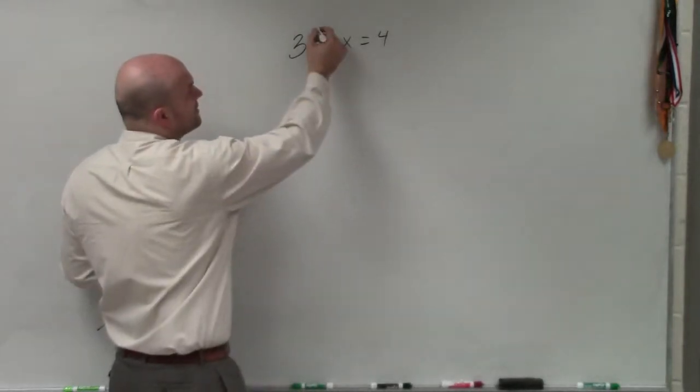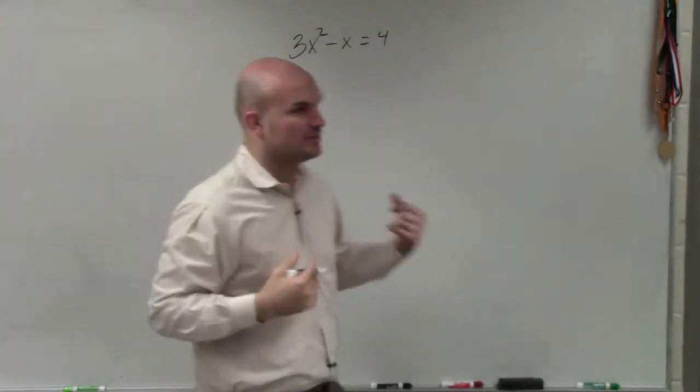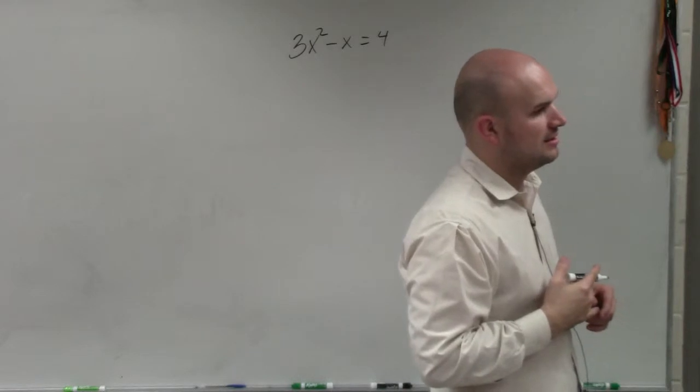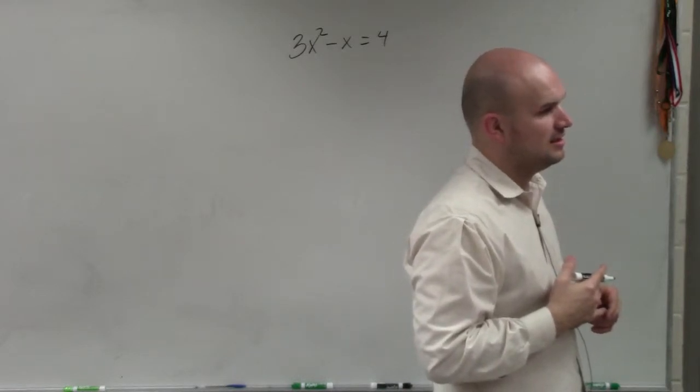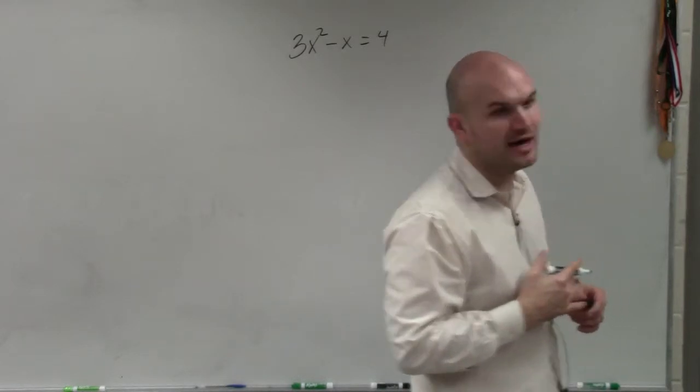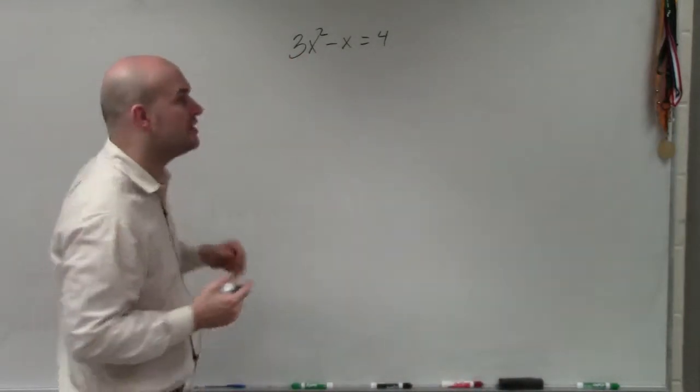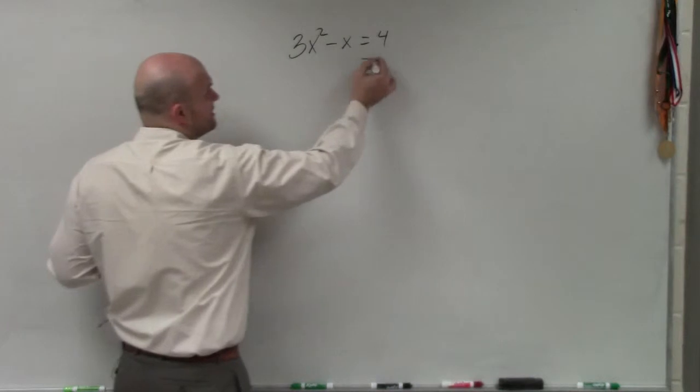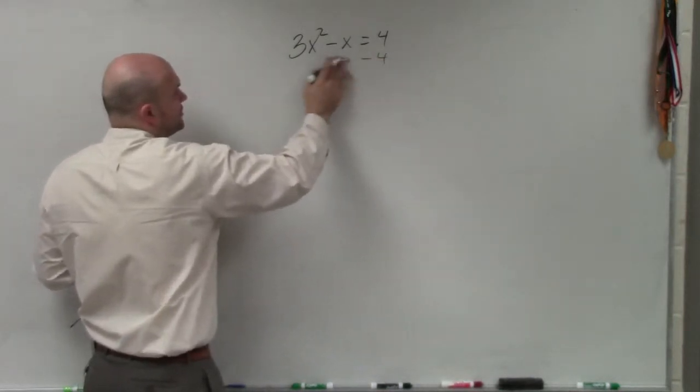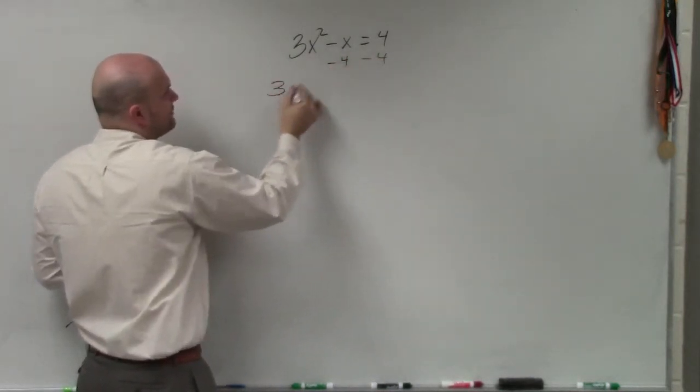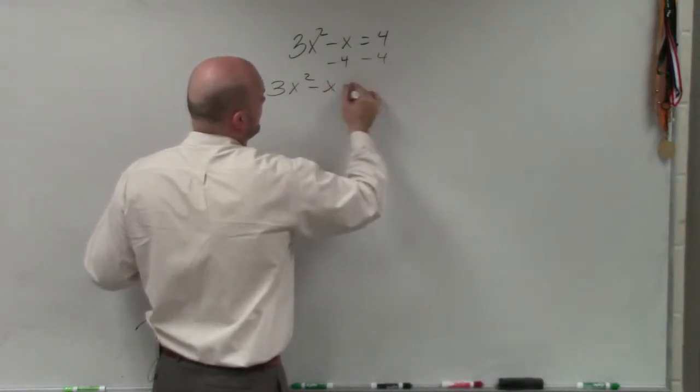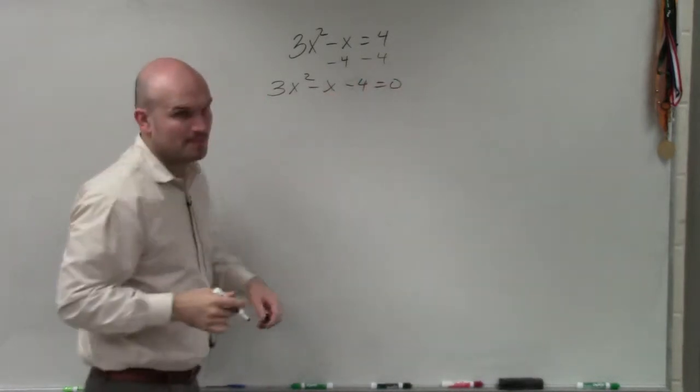So I want to show you one last one that is basically the way that I learned how to do them that you guys can think about using them to do in your head. So first thing again that we need to do is make sure we set it equal to zero. So we have 3x squared minus x equals 4 equals zero.